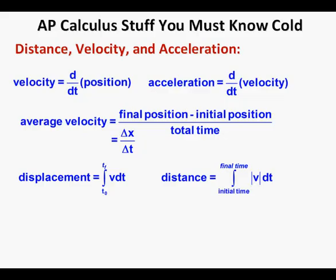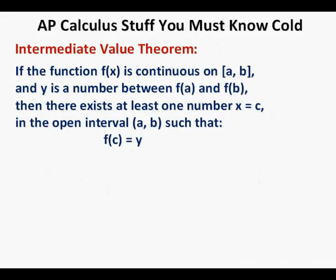Intermediate Value Theorem: if the function f(x) is continuous on the closed interval [a, b] and y is a number between f(a) and f(b), then there exists at least one number x equals c in the open interval (a, b) such that f(c) equals y.